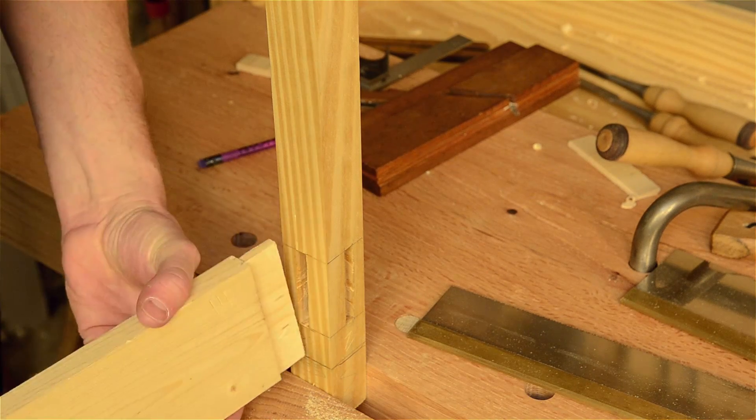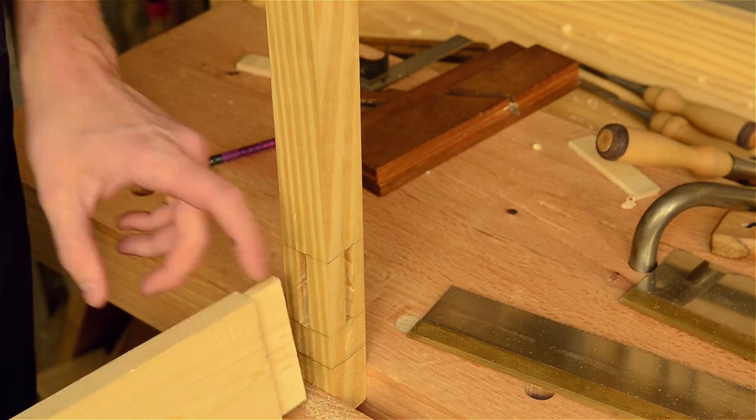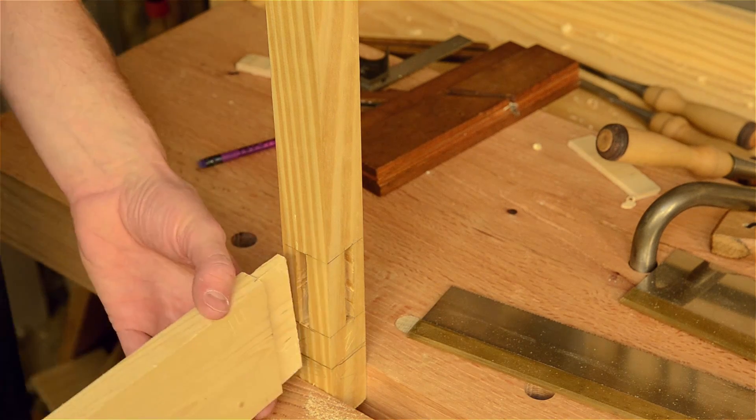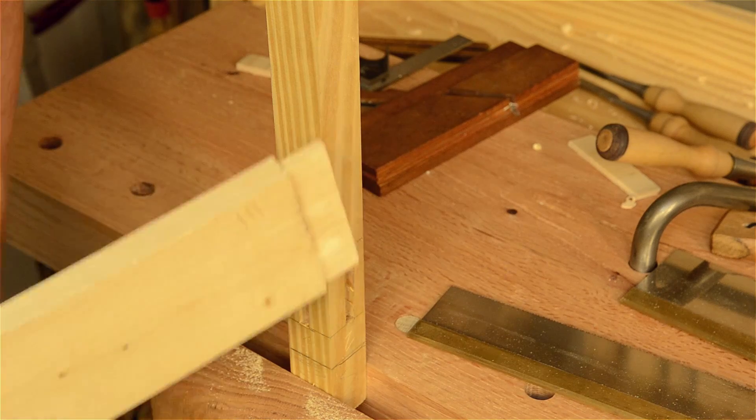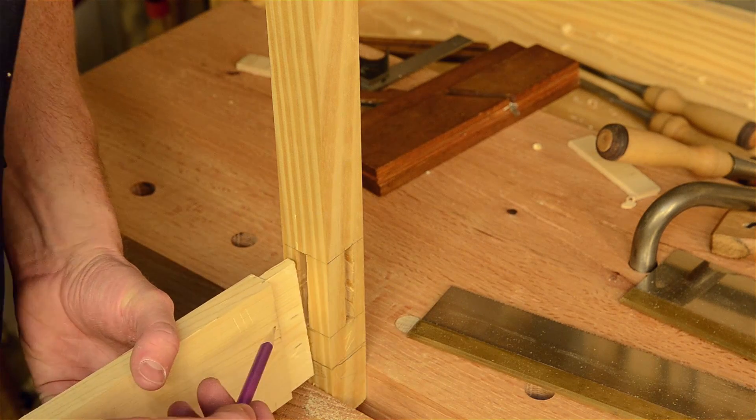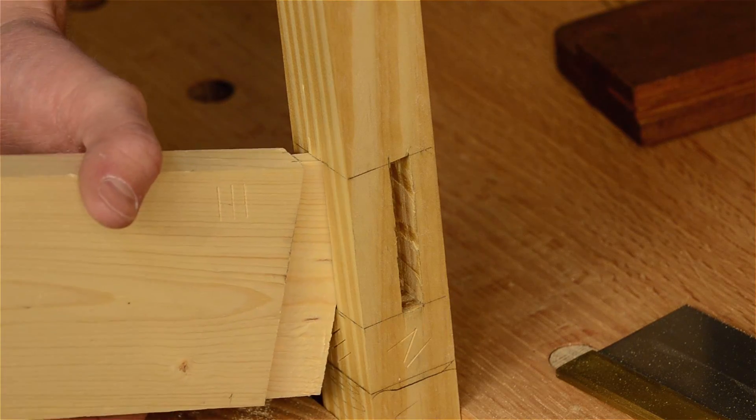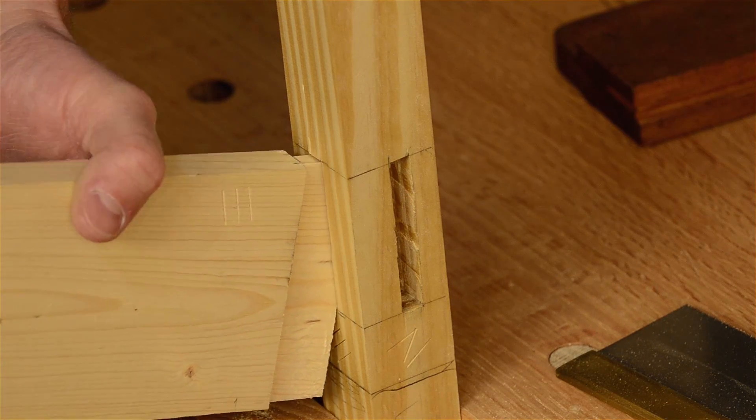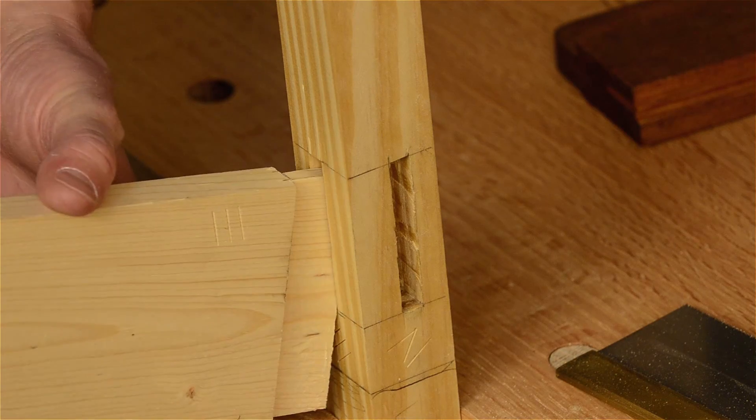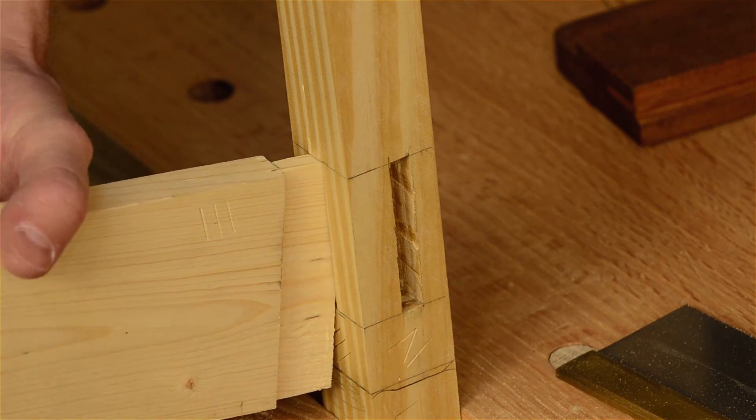So once you are certain you have got the right number and it is facing the right direction, the correct direction, your Roman numerals should be facing inward so you don't see them from the outside. You can stick your tenon there. You can see how that is a little loose but that is okay because we are going to use the draw boring next.